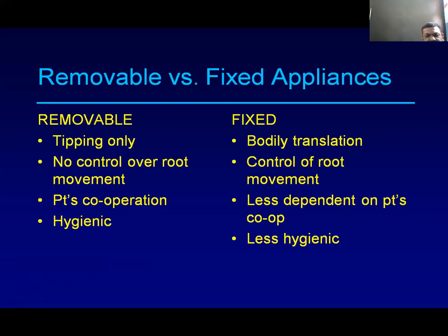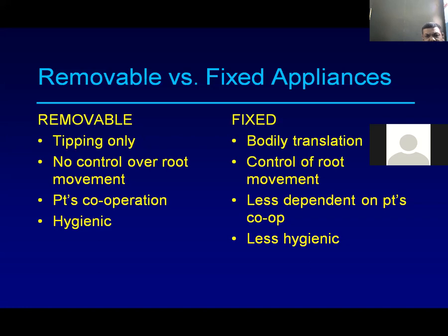With removable appliances, you can only create a simple tipping movement — there is no control over root movement, they require more patient cooperation, and hygiene maintenance is needed. In contrast, fixed appliances allow bodily tooth movement, control of root movement, and control in all three planes — vertical, transverse, and sagittal. They are less dependent on patient compliance.